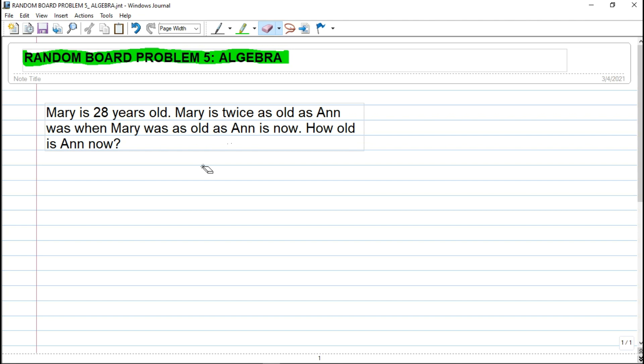So we have here: Mary is 28 years old. Mary is twice as old as Ann was when Mary was as old as Ann is now. How old is Ann now?